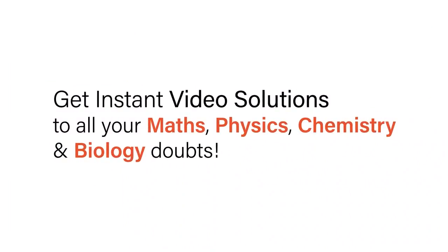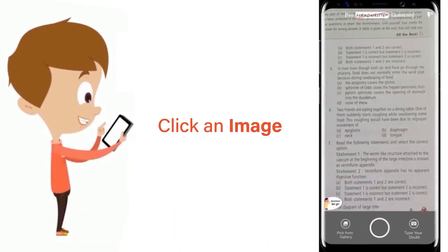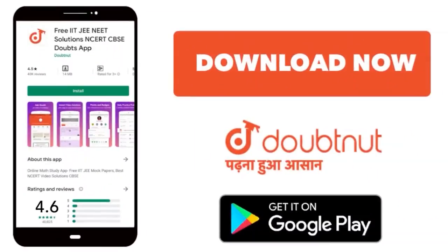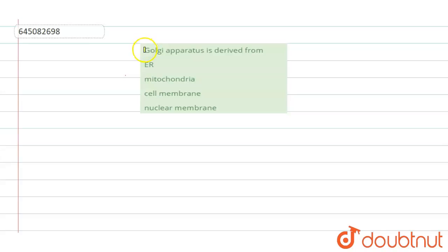With Doubtnet, get instant video solutions to all your maths, physics, chemistry and biology doubts. Just click the image of the question, crop the question, and get instant video solution. Download Doubtnet app today. And in this question, we are given: Golgi apparatus is derived from. The options are ER, mitochondria, cell membrane, and nuclear membrane.